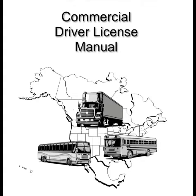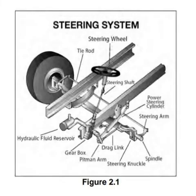Bad brake drums or shoes: cracked drums; shoes or pads with oil, grease, or brake fluid on them; shoes worn dangerously thin, missing, or broken. Steering system defects: missing nuts, bolts, cotter keys, or other parts; bent, loose, or broken parts such as steering column, steering gearbox, or tie rods. If power steering equipped, check hoses, pumps, and fluid level; check for leaks. Steering wheel play of more than 10 degrees — approximately 2 inches movement at the rim of a 20-inch steering wheel — can make it hard to steer. See figure 2.1.